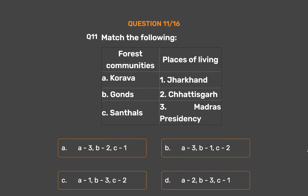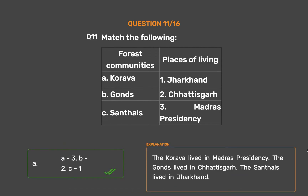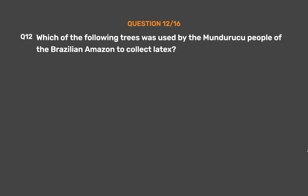The correct answer is Option A: A-3, B-2, C-1. The Korava lived in Madras Presidency. The Gonts lived in Chhattisgarh. The Santals lived in Jharkhand. Question 12: Which of the following trees was used by the Munduruchu people of the Brazilian Amazon to collect latex?